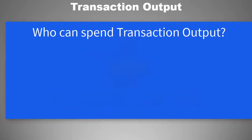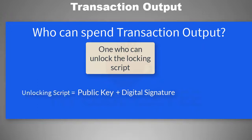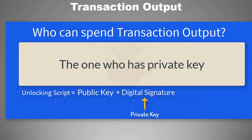Who can spend a transaction output? You can spend it if you are able to unlock the puzzle binding the Bitcoin to a Bitcoin address. You can unlock it only if you have the public key from which the Bitcoin address was created, and the digital signature of the private key from which that public key was created. This combination of digital signature and public key is called the unlocking script. Since the digital signature is created using the private key, only if you have the private key can you spend a transaction output.